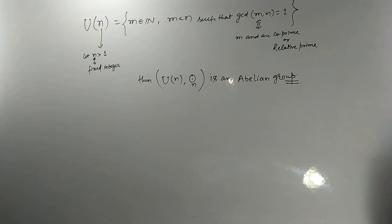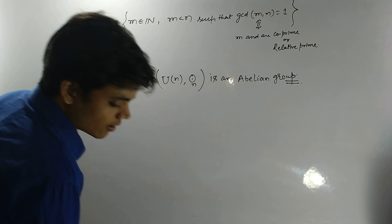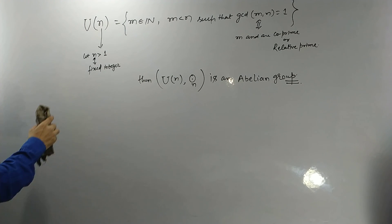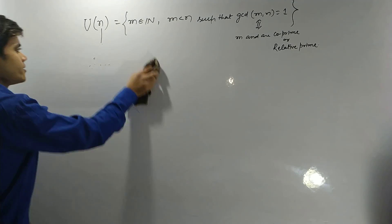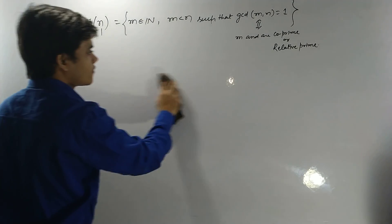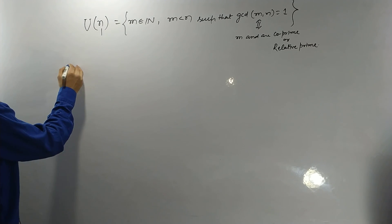So U(n) with multiplication modulo n is an abelian group. Please write this down. I will give you an example and we will verify it — it will be very interesting to see.